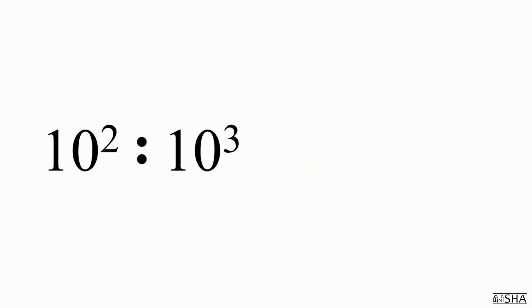Ten to the power of two, divided by ten to the power of three. We confidently and without hesitation, write down the base. Then we subtract the powers. Two minus three, equals negative one. The answer is ten to the negative first power, or a tenth.